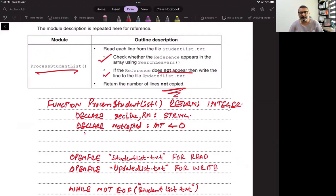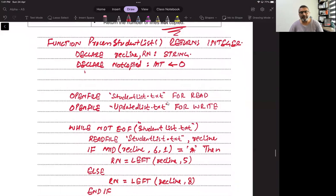So function process students list returns integer. Declare record line. Record line will be the string that will be used to extract the record from the file and reference number that we will use to extract the reference number from the record line. And then we have to have this counter, which is not copied counter which we initialize it to zero. So we open the file for read, which is a student list file. And then we open the file updated list for write, which is the file in which we will write all those students records whose reference was not found in leavers array.